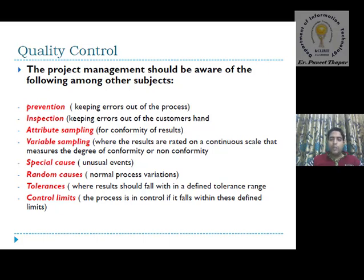Special causes are unusual events that occur in our system and are controlled by specific mechanisms. Random causes represent normal process variation — random errors are controlled by this. Tolerance defines where results should fall within a defined tolerance range. Up to this range we can tolerate the causes; if the range is exceeded, we cannot tolerate the causes.